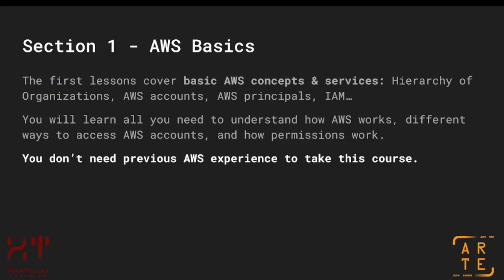This course is divided into four sections. Section one covers AWS basics. During this section, we will be talking about basic AWS concepts and services, such as the hierarchy of organizations, how AWS accounts work, AWS principals, users, groups, roles, and even the IAM service — which is how permissions are granted to users. These are very basic but important fundamentals to learn if you later want to continue developing your hacking skills over AWS. To take this course, you don't need any previous AWS experience because we are actually going to start from the basics.